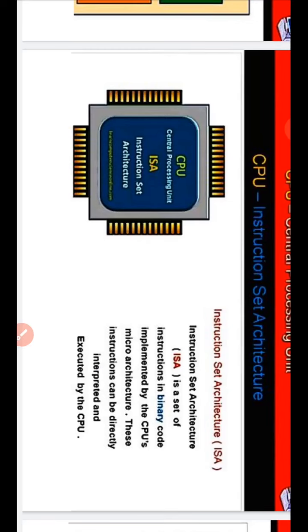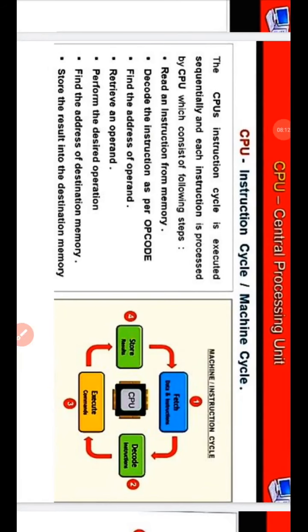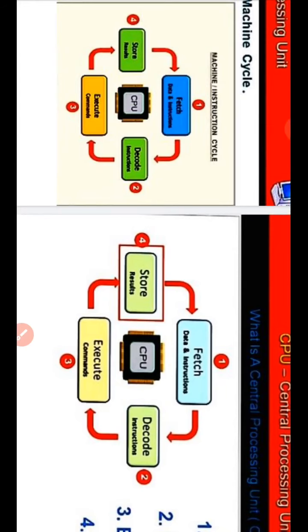Instructions can be directly interpreted and executed by the CPU. The CPU instruction cycle, or machine cycle, is executed sequentially and each instruction is processed by the CPU. The steps are: read an instruction from memory, decode the instruction, find the address of the operand, retrieve the operand, perform the desired operation, find the address of destination memory, and store the result. The four main steps are: fetch, decode, execute, and store — forming the instruction cycle of the CPU.